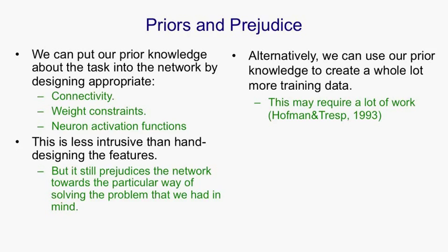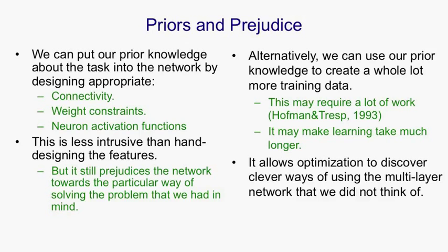Of course, if you generate a lot of synthetic data, it may make learning take much longer. So in terms of the speed of learning, it's much more efficient to put in knowledge by using things like connectivity and weight constraints, as was done in LeNet-5. But as computers get faster, this other way of putting in knowledge, by generating synthetic examples, begins to look better and better. In particular, it allows optimization to discover clever ways of using the multilayer network that we didn't think of. In fact, we might never fully understand how it does it. If we just want good solutions to a problem, that might be fine.